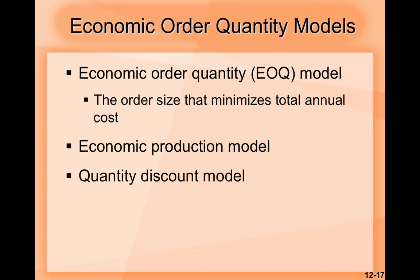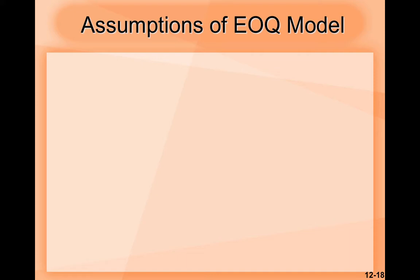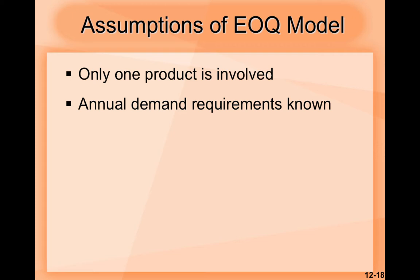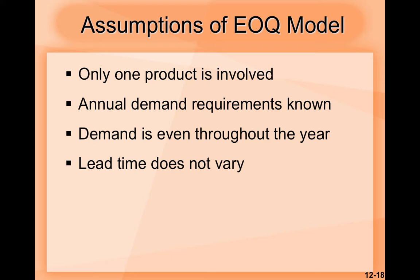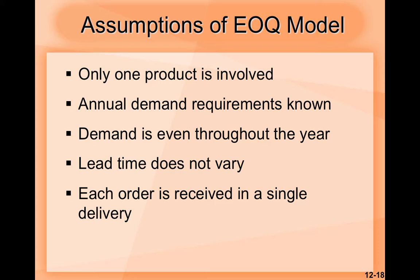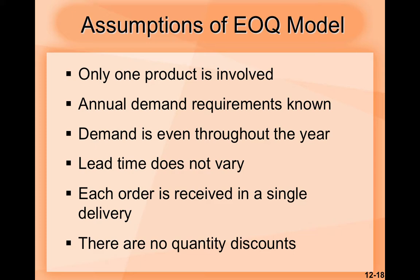Economic order quantity models include: first, the EOQ model — the order size that minimizes total annual cost; second, the economic production model; and third, the quantity discount model. The EOQ model assumptions are: only one product is involved, annual demand requirements are known, demand is even throughout the year, lead time does not vary, each order is received in a single delivery, and there are no quantity discounts.